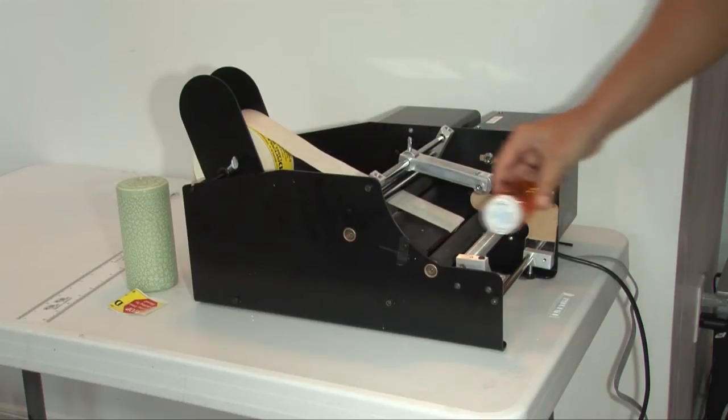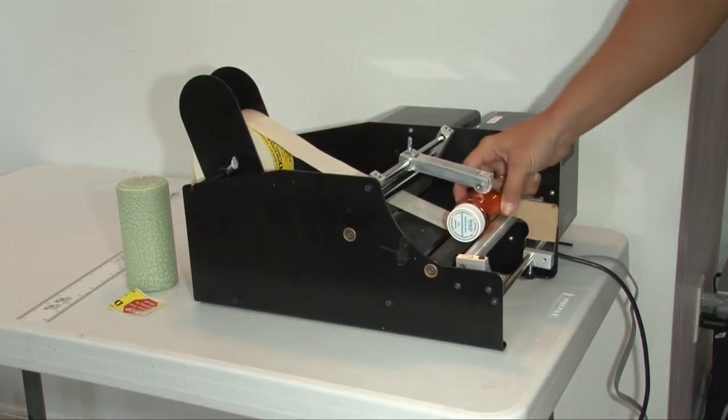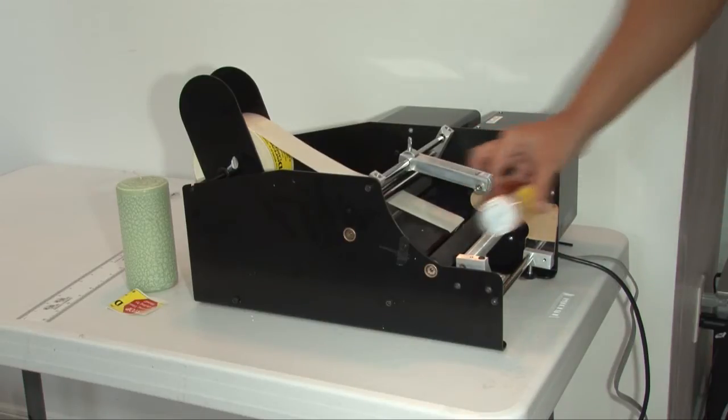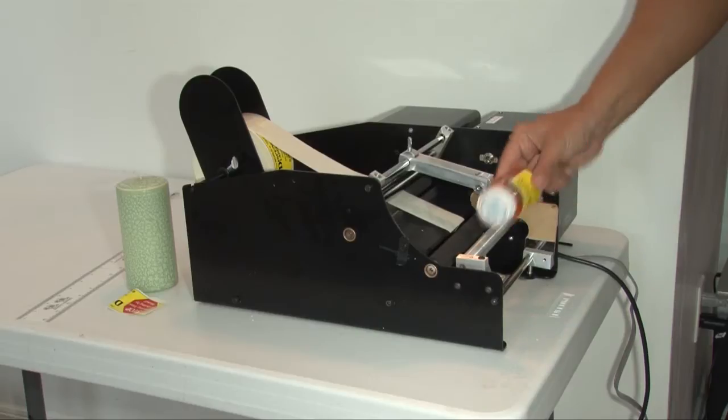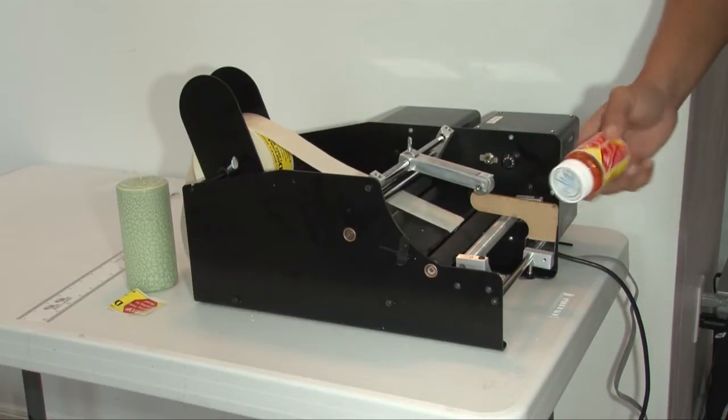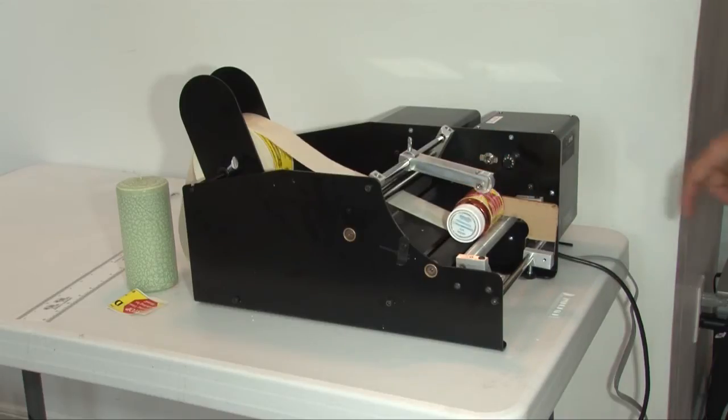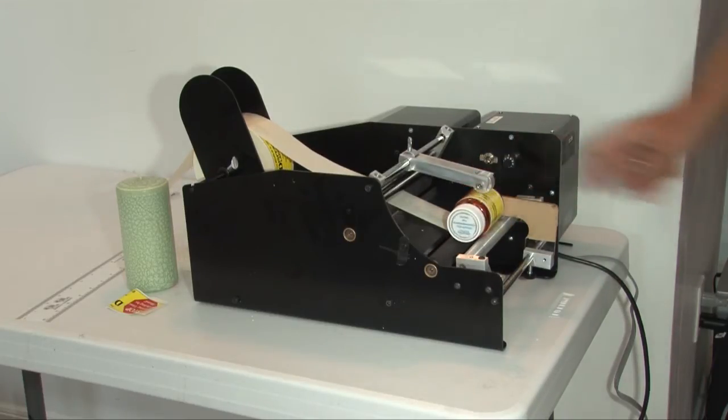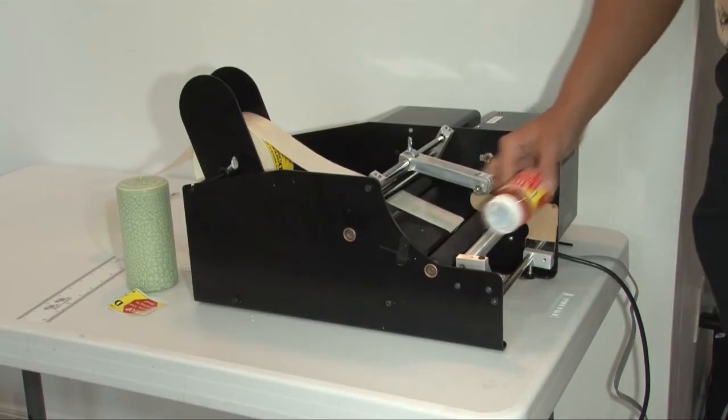That way we can easily slide the bottle underneath the pressure arm. It'll hold it in place and then apply the label. You should be able to easily just slide the container in and slide it out after it's labeled. You do not need to wait for it to stop. As soon as the label is done applying to the container, you can remove it and put in the next container.